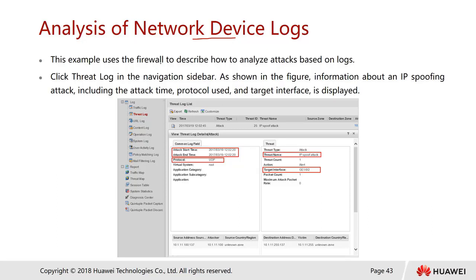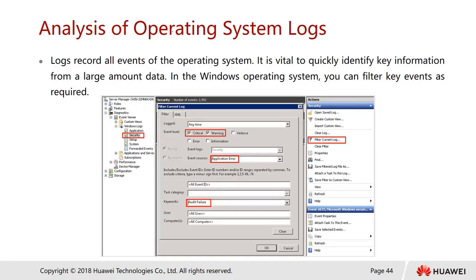Here is an example of analysis from a network device log — specifically a firewall log. Click on the threat logs in the navigation sidebar as shown in the figure. It provides information about an IP spoofing attack, including attack time, protocol used, target interface, and port. In this example, you can see the IP spoof source interface, time of attack, and that the protocol used was UDP.